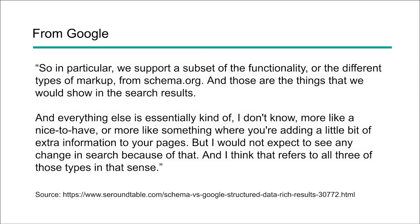Here's a little bit more information from Google, covered on SEO Roundtable, looking at the difference between schema and Google structured data. This is what John Mueller said: "In particular, we support a subset of the functionality or the different types of markup from schema.org. Those are the things that we would show in the search results." So Google is taking certain types of markup from schema.org and using that to enable rich results. He goes on to say that everything else is essentially a nice to have, adding a little bit more information, and he doesn't expect it to have any impact on search.